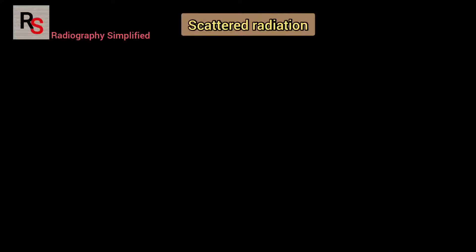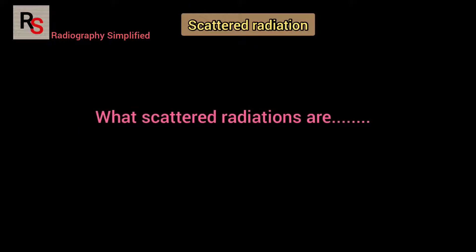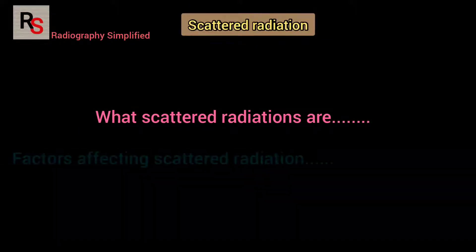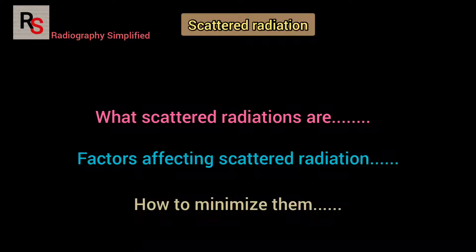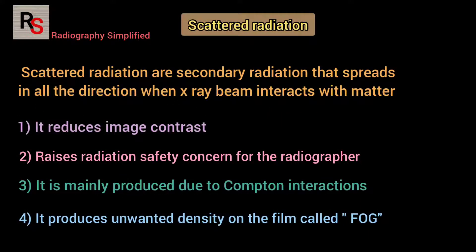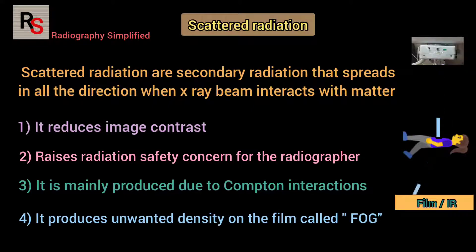As a radiographer, it is very important for us to understand what scattered radiation is and what factors influence it. Scattered radiation is secondary radiation that is spread in all directions from a beam when an X-ray beam interacts with matter, like body tissue, a wall, or an X-ray table.